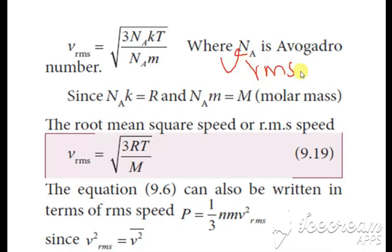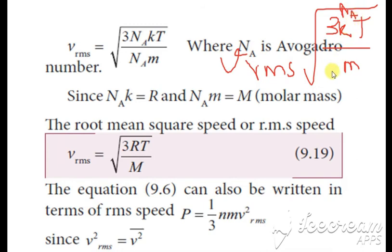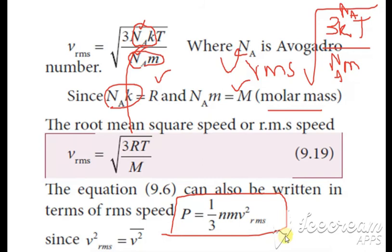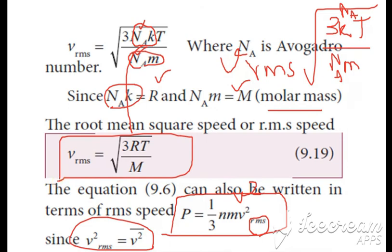The formula for V_RMS is √(3KT/M). Now we multiply and divide by Nₐ. Nₐ × K is written as R, and Nₐ × M is written as M, which is the molar mass. So we get V_RMS = √(3RT/M). This equation can also be written in terms of RMS speed where pressure is P = (1/3) × NM × V²_RMS. Since V²_RMS and V̄² are the same, we can use V²_RMS, and this gives the formula for root mean square speed.